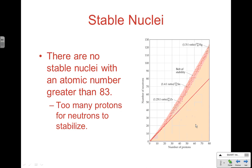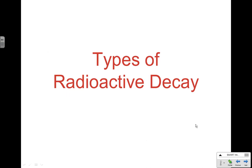If you have a large atom, eventually there's just no way to stay stable — you have too many protons, and neutrons can't provide a stabilizing effect. Anything greater than atomic number 83 has too many protons for neutrons to stabilize, and they are all unstable. For very large atoms, we basically need to shed nuclear mass to become stable. The different types of radioactive decays can get us back in the belt of stability.